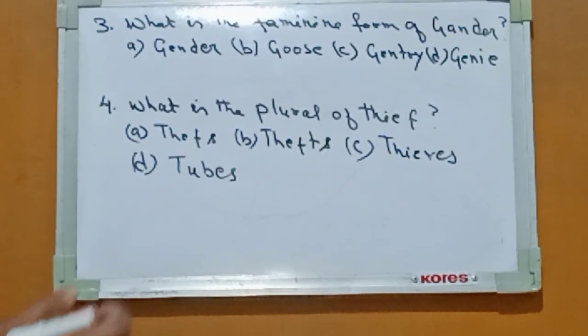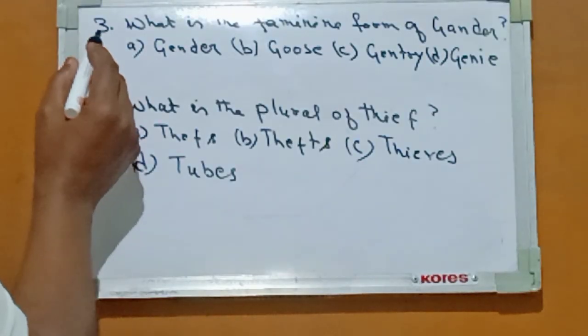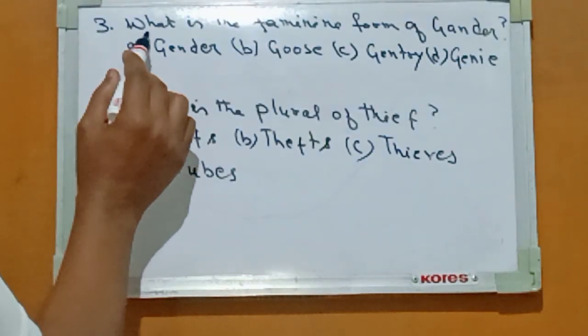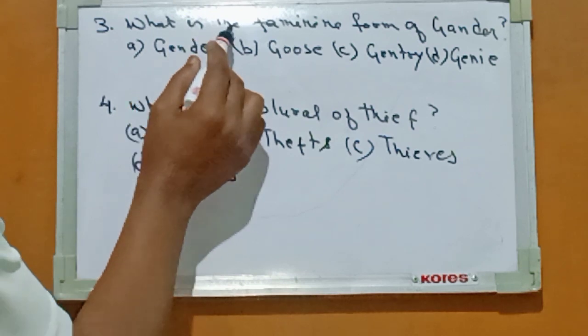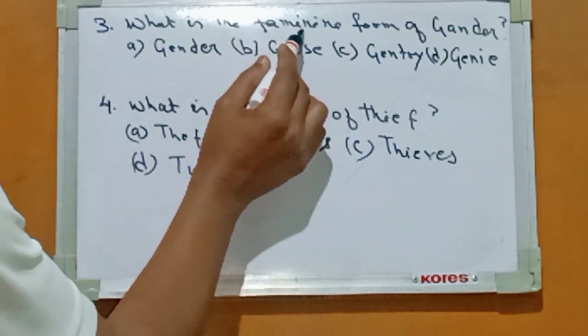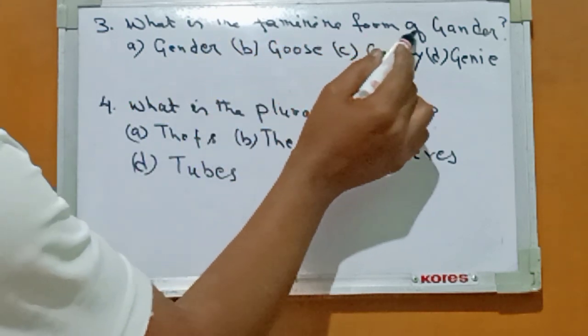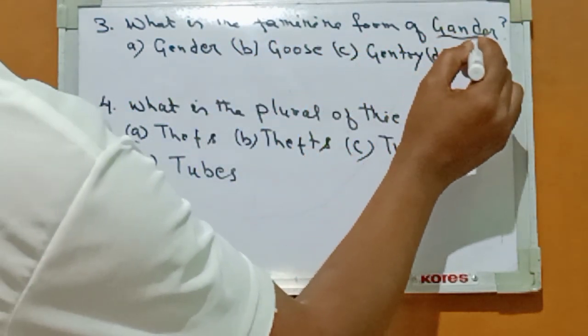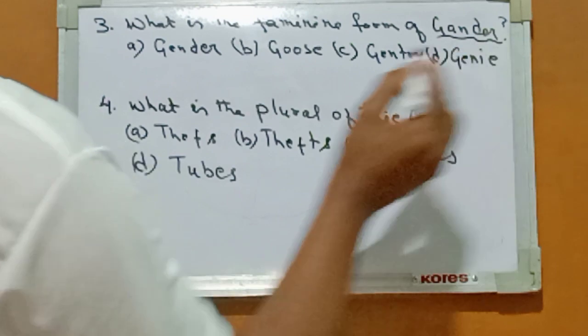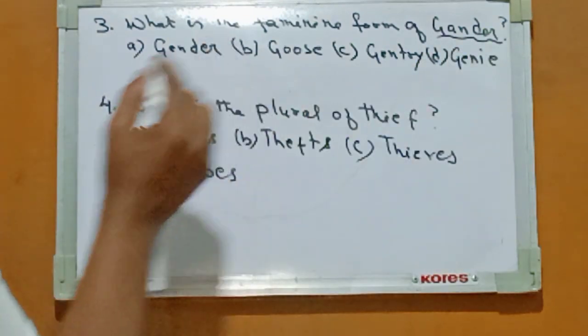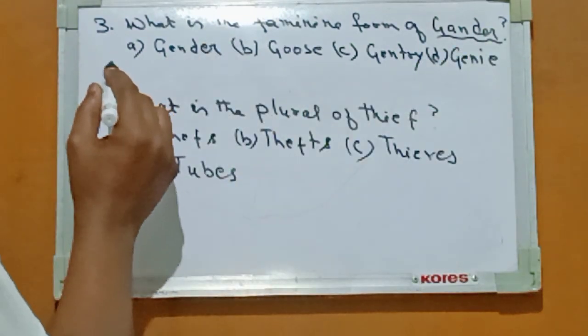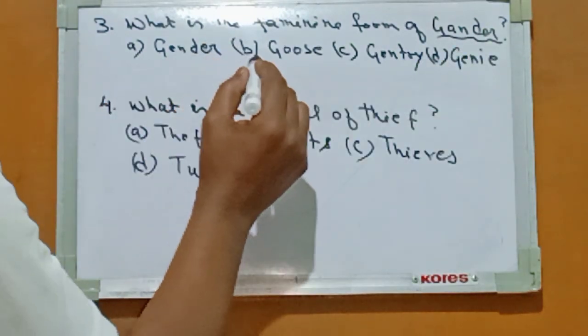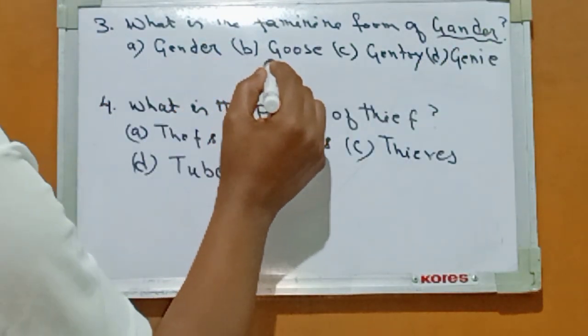Number three: what is the feminine form of gender? And the right answer is Option B: goose.